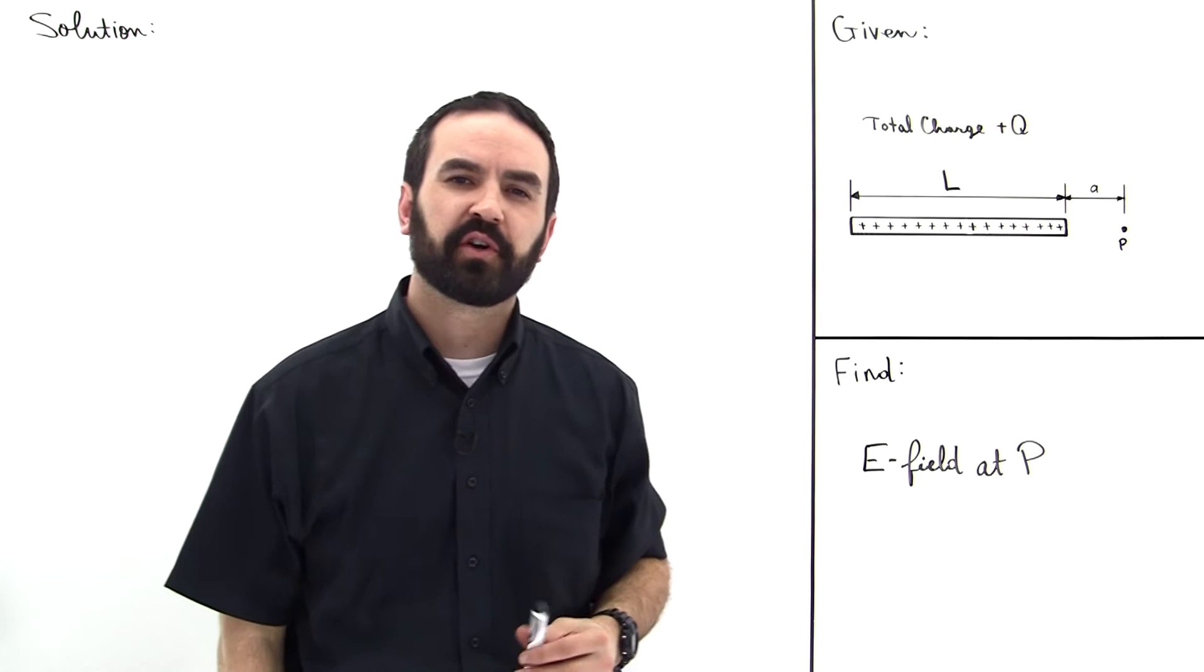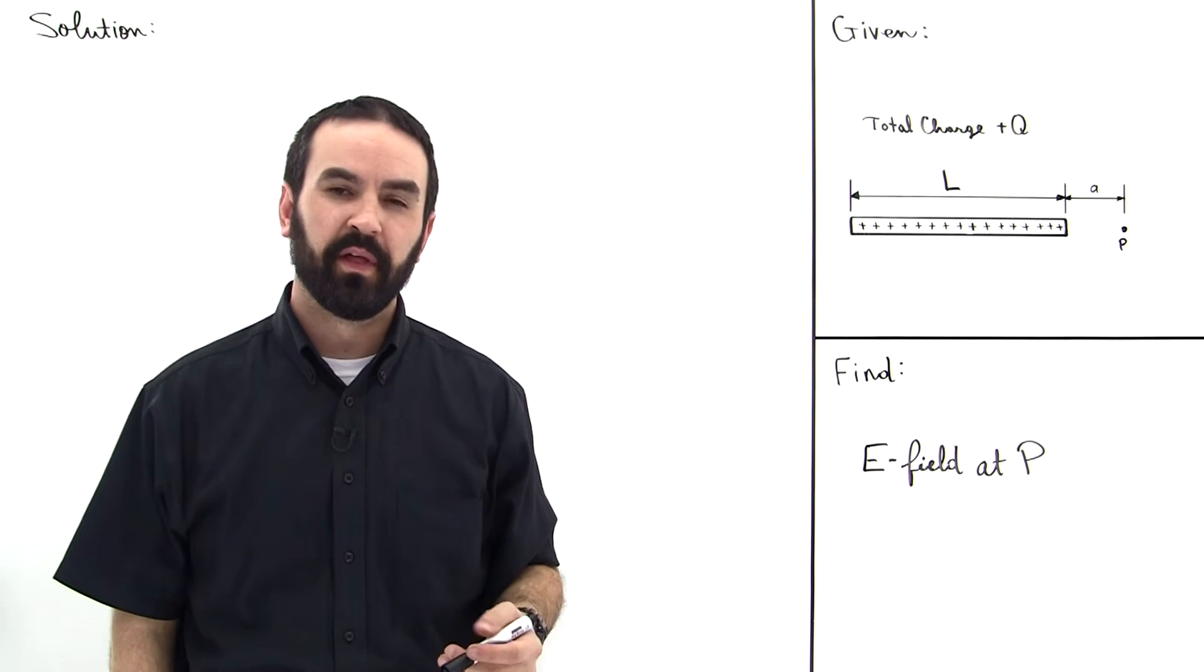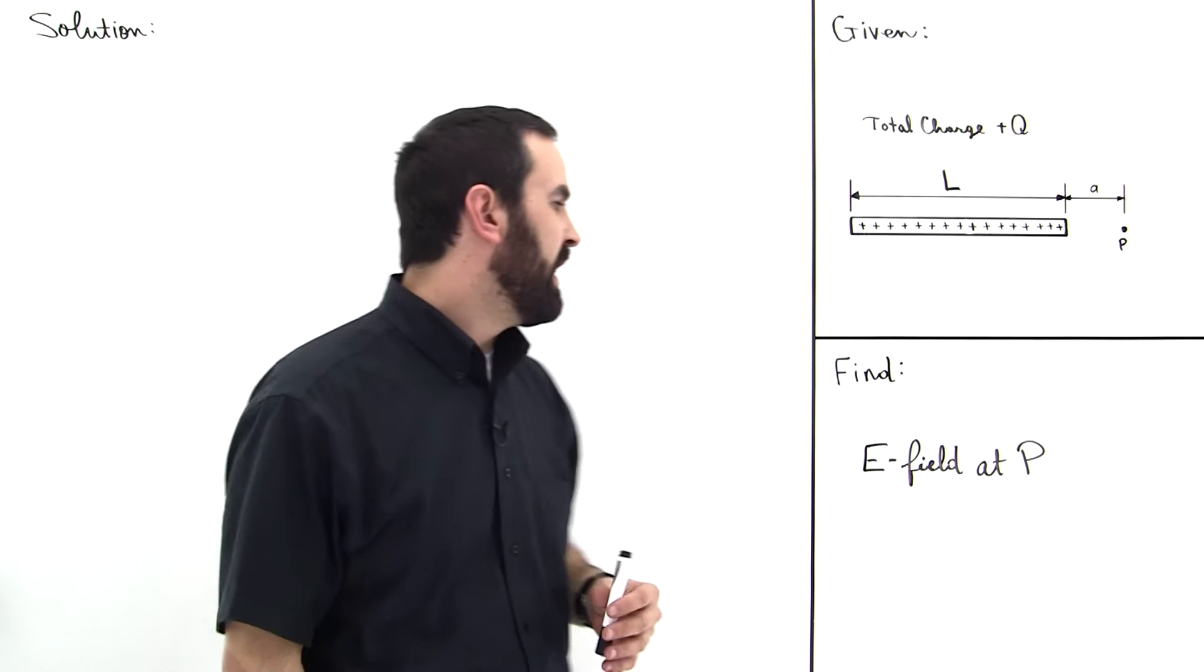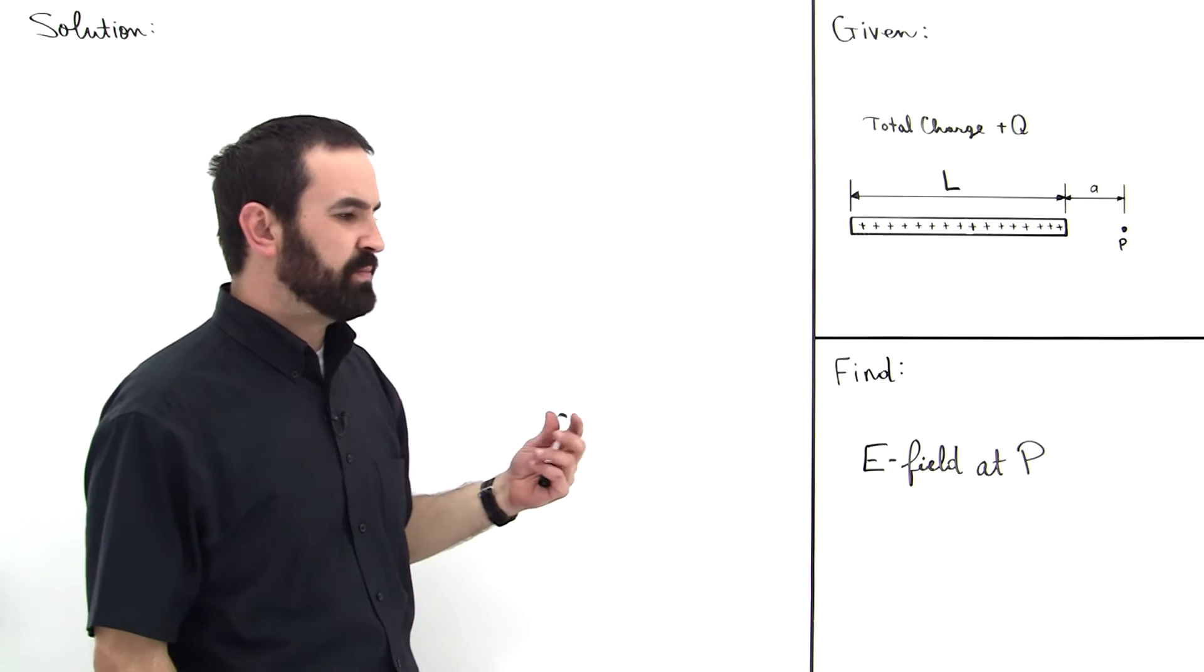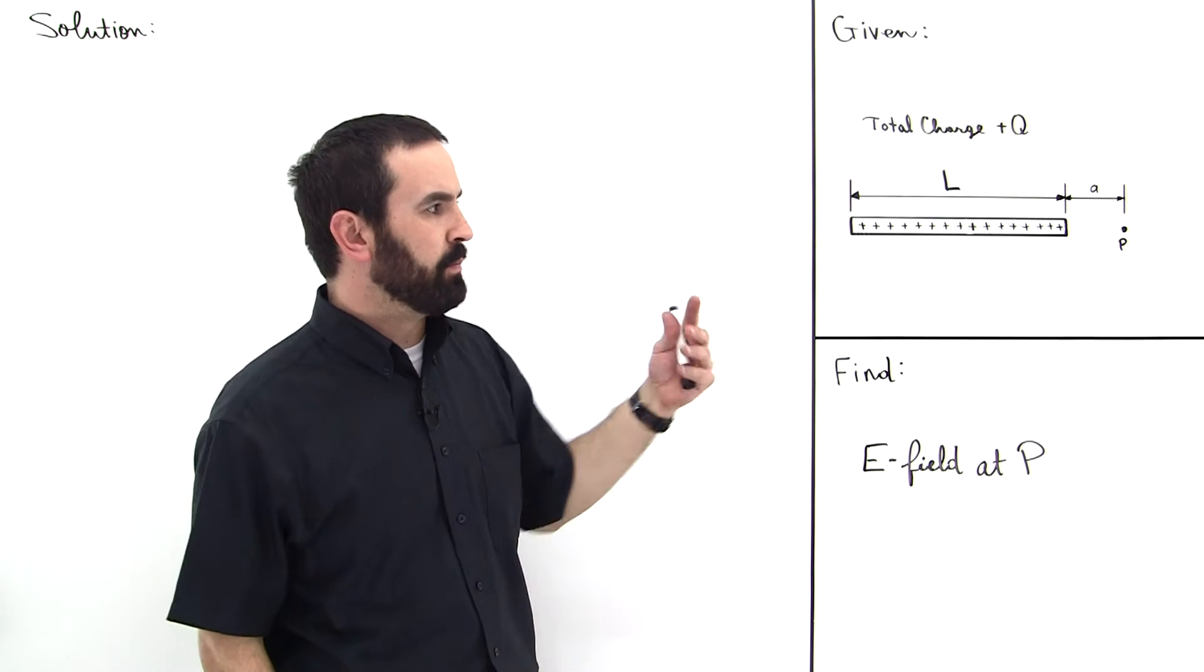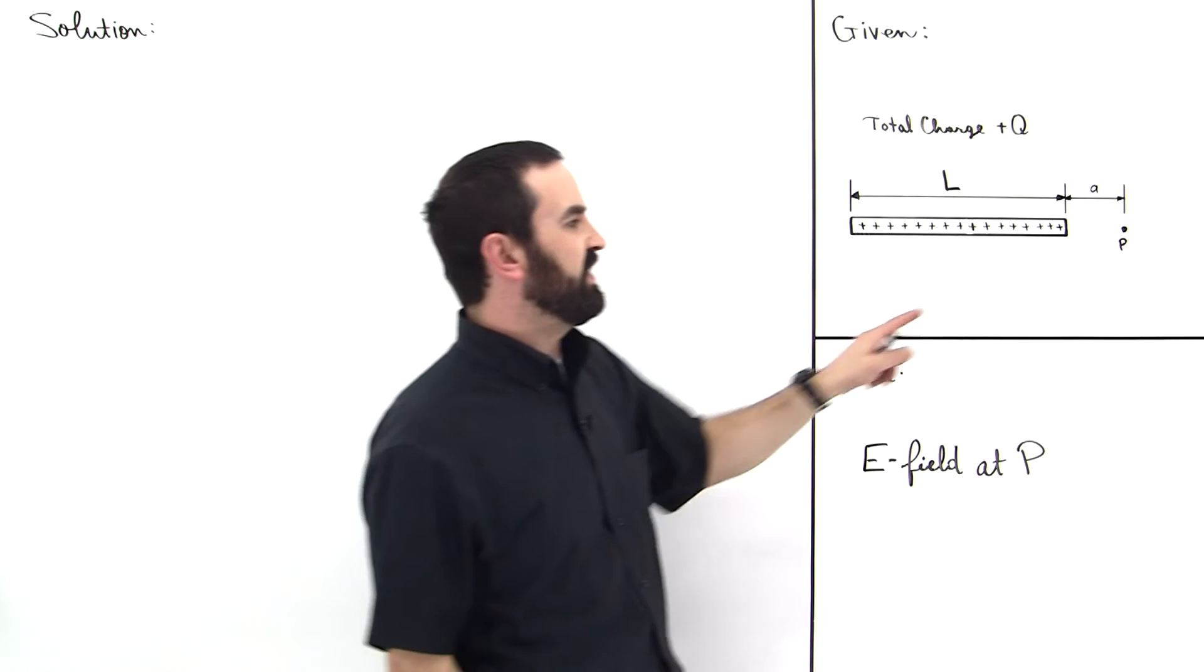We're given a charged rod with total charge plus Q and length L. We're asked to find the E field at point P.